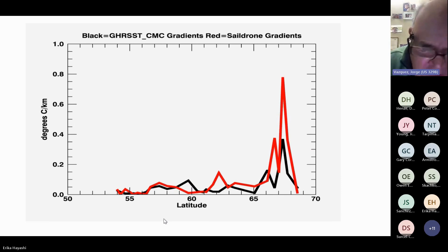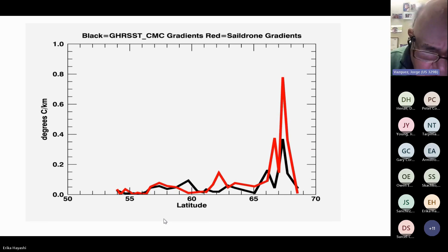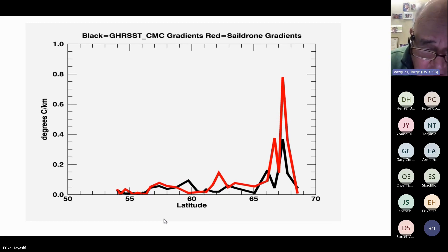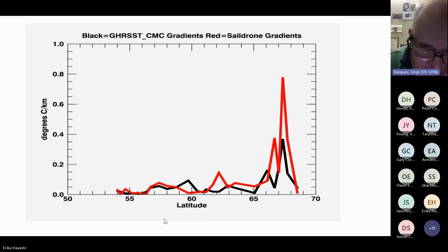For the CMC, it's the same story: in general, a good correlation along the SAIL drone track. These are gradients measured in degrees Celsius per kilometer.